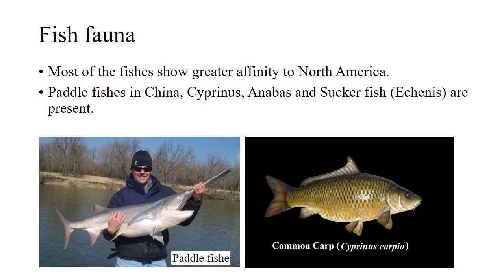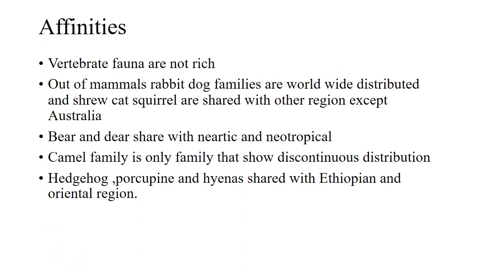Most fishes show affinity to North America. Fishes like paddlefish, present in China, Cyprinids, and suckerfishes are prevalent in this region. The vertebrate fauna is not rich in endemic mammals. Rabbit and dog families are worldwide in distribution, while shrew, cat, and squirrels are shared with other regions except Australia. Bear and deer are shared with Nearctic and Neotropical regions. The camel family shows discontinuous distribution as camels are only present in deserts. Hedgehog, porcupine, and hyena are shared with the Ethiopian and Oriental regions.